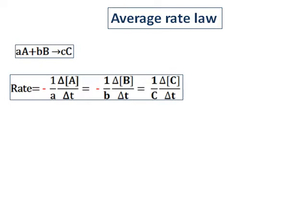There is a negative sign in front of the reactants A and B, because the concentration of A and B, the reactants, is decreasing. And the concentration of C, the product, is increasing. But as far as the rate is concerned, we take the absolute value, so it will be positive only. The negative sign indicates the decrease in concentration.